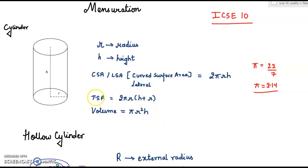Now TSA, that is total surface area, means curved surface area plus area of these two circles. This is the curved surface area, and these are the two circles that we have to add so as to get total surface area. So this will be 2πrh plus 2πr², which equals 2πr(h + r). The volume of this cylinder is πr²h.